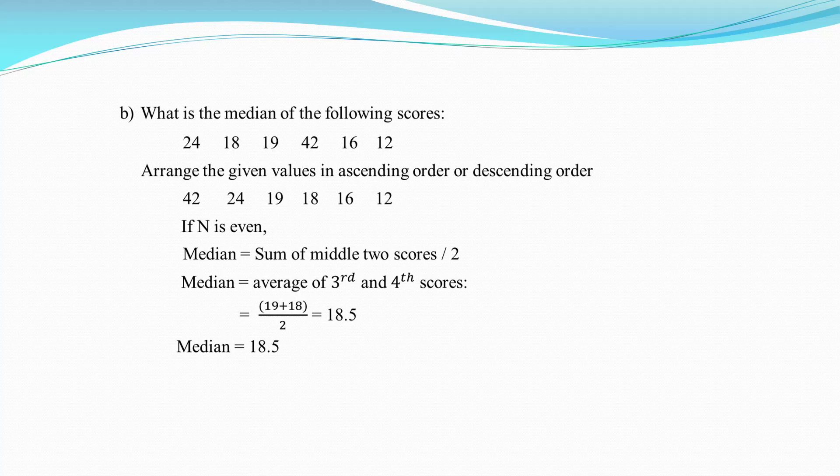If n is even: what is the median of the following scores: 24, 18, 19, 42, 16, 12? First, arrange the values in ascending or descending order: 42, 24, 19, 18, 16, 12. Since n is even, the median equals the sum of the middle 2 scores divided by 2. The middle 2 scores are the 3rd and 4th values. Median = (19 + 18) / 2 = 18.5. The median is 18.5.